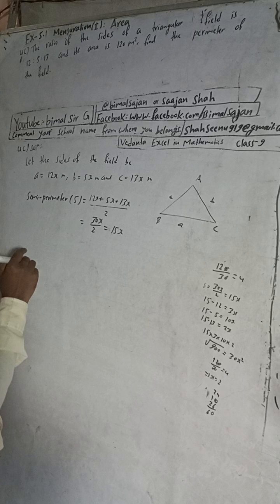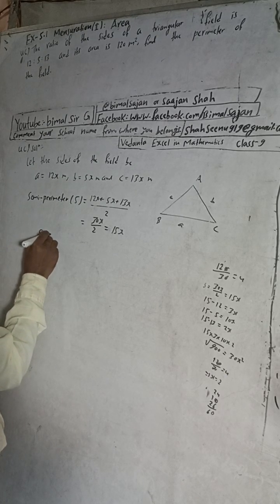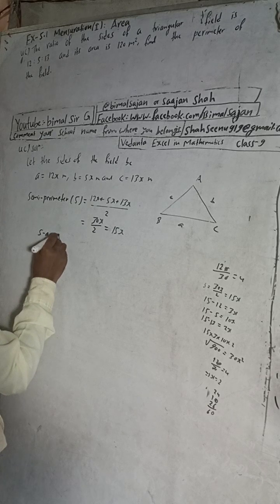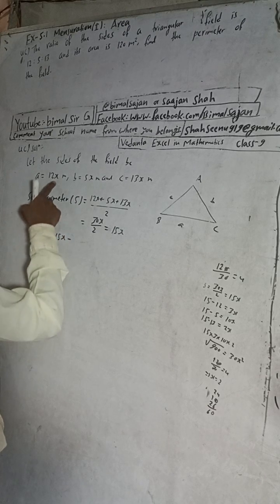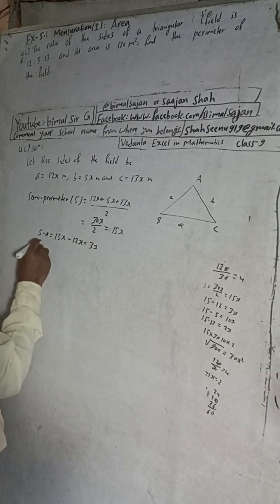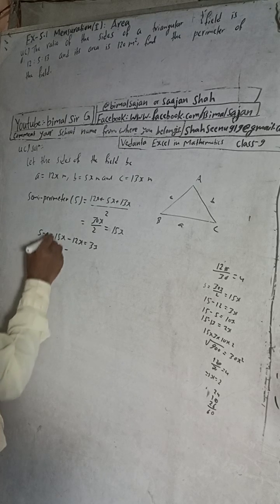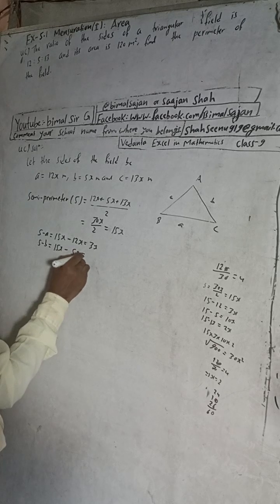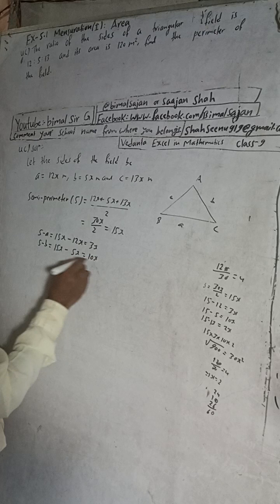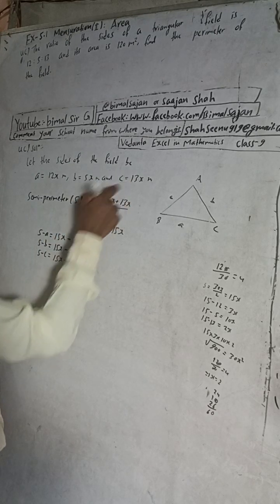Now we calculate: s minus a = 15x minus 12x = 3x. s minus b = 15x minus 5x = 10x. s minus c = 15x minus 13x = 2x.